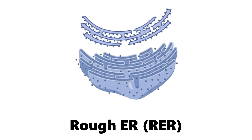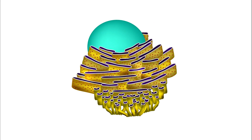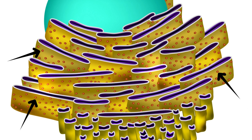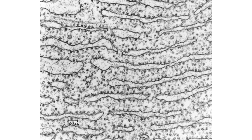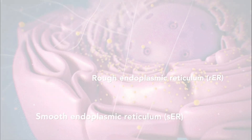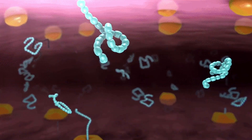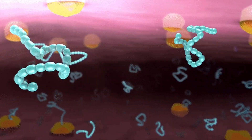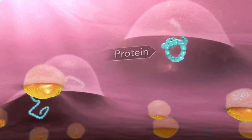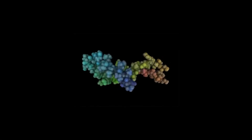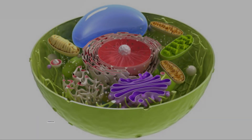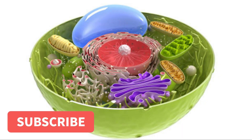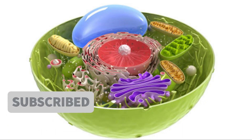The rough ER gets its name from the ribosomes attached to its surface, giving it a bumpy appearance under the microscope. These ribosomes are responsible for protein synthesis, and the rough ER plays a crucial role in folding and modifying newly synthesized proteins. Once these proteins are properly shaped and packaged, they are transported to their intended destinations within the cell or even outside of it.